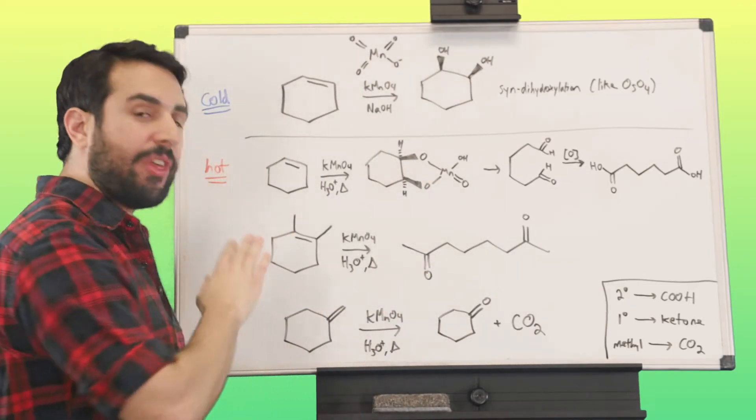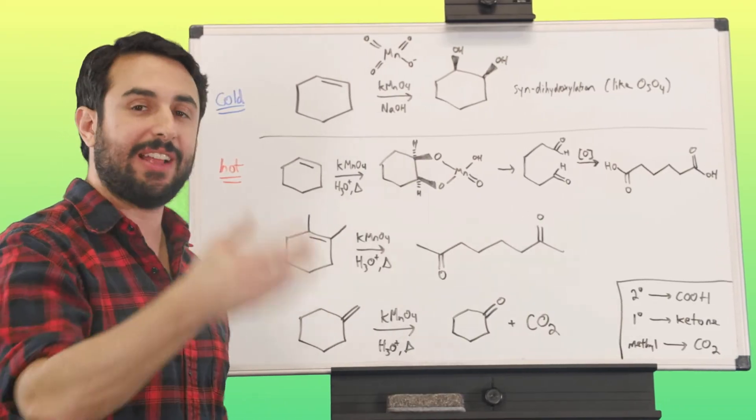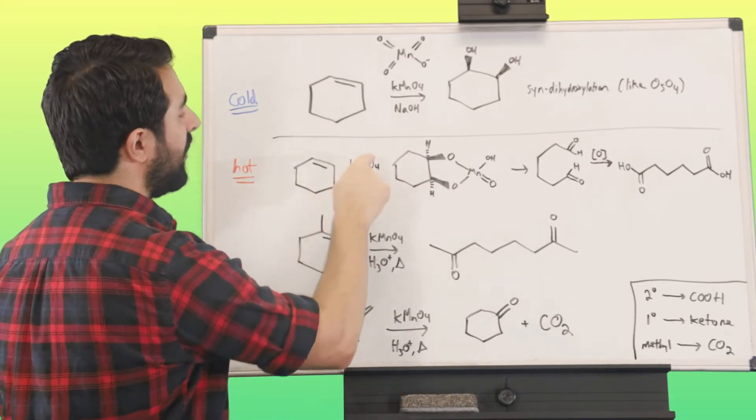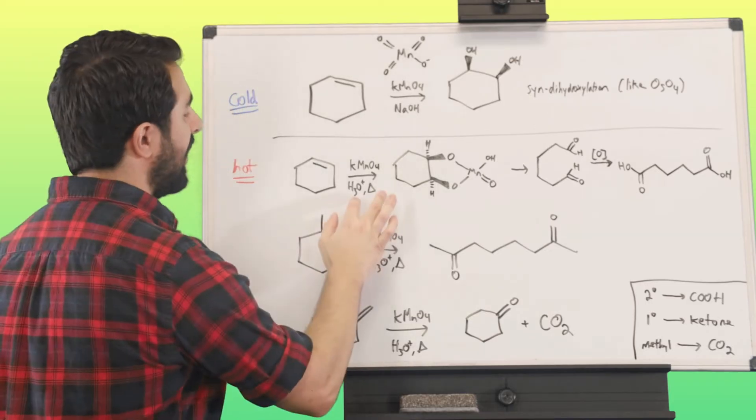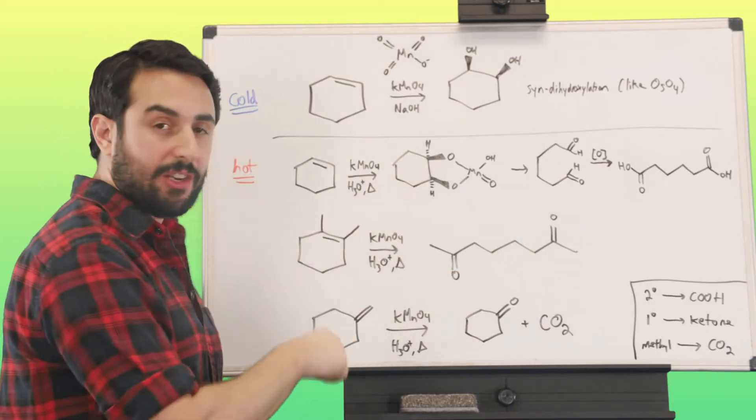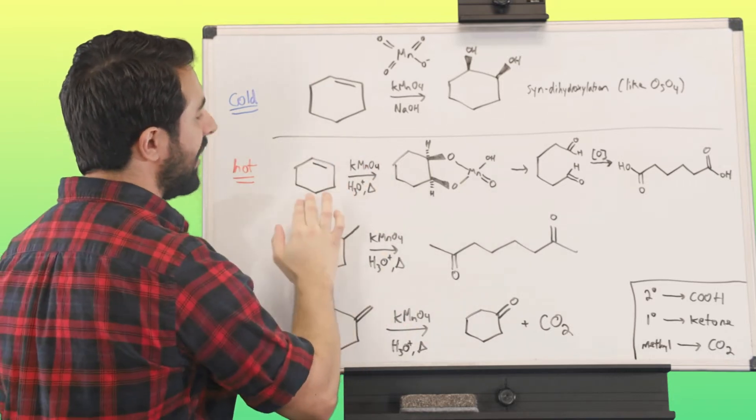Now with hot conditions, it's just a little bit trickier. It enhances the oxidizing ability of potassium permanganate. We've got potassium permanganate this time in acidic conditions, H3O+, and remember the triangle means heat. We're going to cook it up a little bit. We've got our same substrate, cyclohexene.